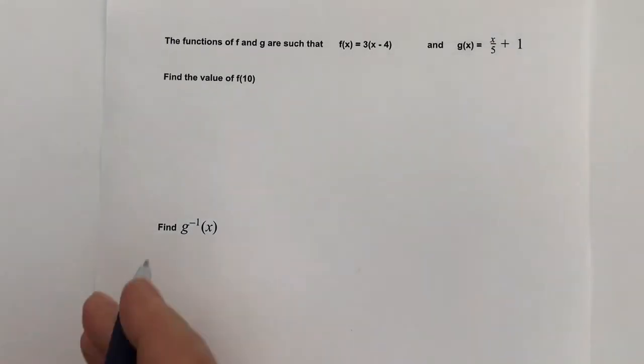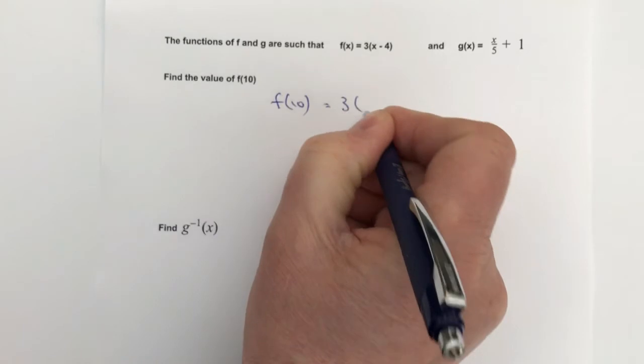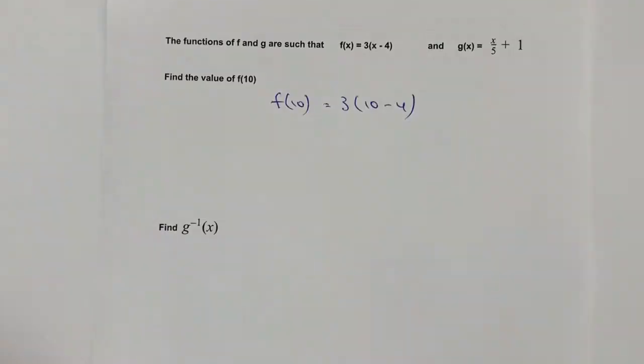So what we end up with is simply f(10) equals 3 times (10 - 4). We're taking this value of x and making it 10, and then if we solve that we always work within the brackets first.